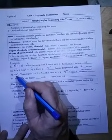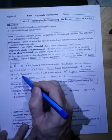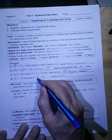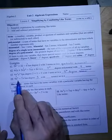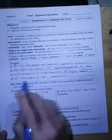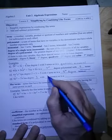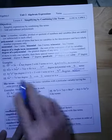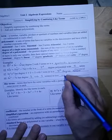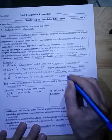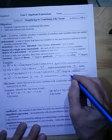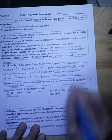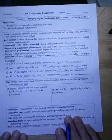This next one: one term has degree 3, the other has degree 1, so the polynomial has degree 3. There are two terms, making it a binomial. Since there's only one variable, we can use the special name — this is a cubic binomial.